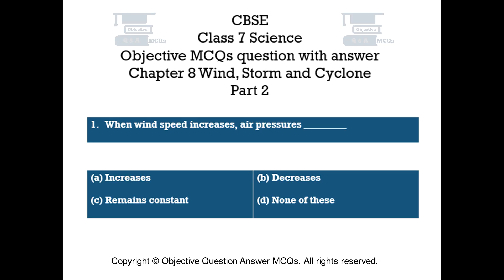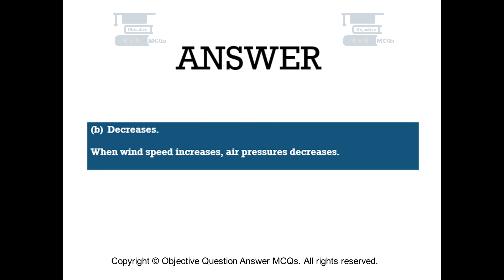Question number 1. When wind speed increases, air pressure — Option A: increases. Option B: decreases. Option C: remains constant. Option D: none of these. The right answer is Option B: decreases. When wind speed increases, air pressure decreases.